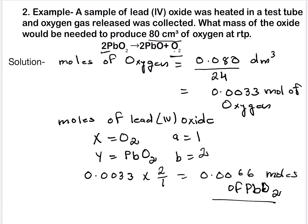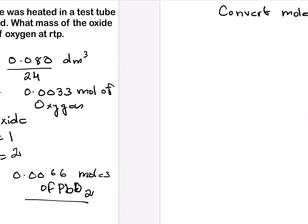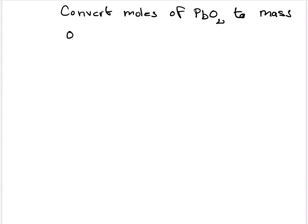Now the next thing is convert moles of PbO2 to mass. So next process is we have to convert moles of PbO2 to mass. So let's do that. What was the moles of PbO2? 0.0066.